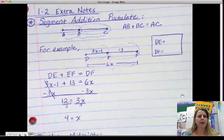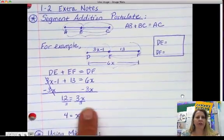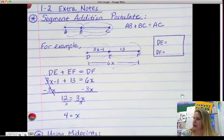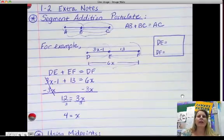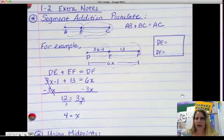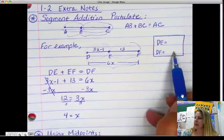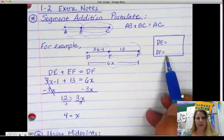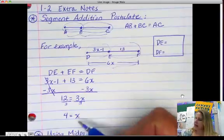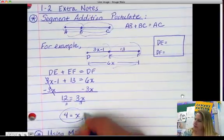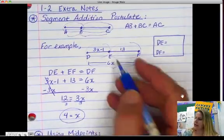Now, in algebra, you would have been done, because you would have solved for x, and that's usually what you do for algebra. In geometry, you always, almost always, have to go one further step and see what they're asking for. Notice that they're not asking for what x is. They're asking for the length of DE and DF.